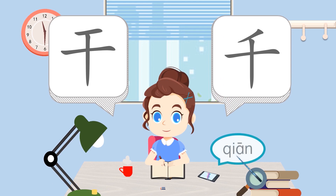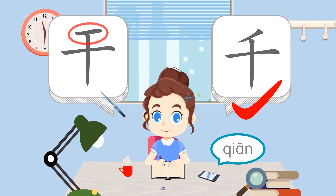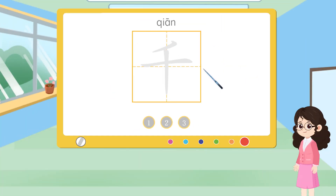先 — tell me which one is correct. 第2个. Let's see what is wrong with the first character. Now, let's see how to write this character correctly. Please write it once with me.